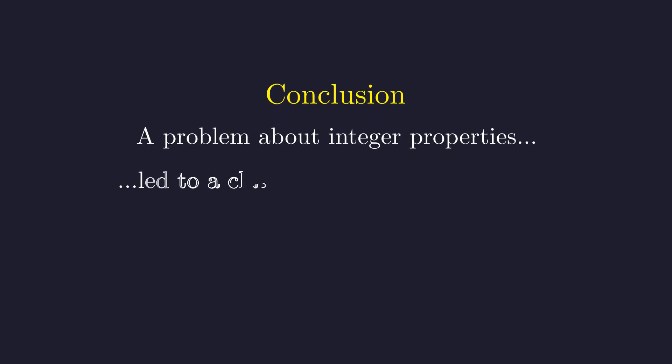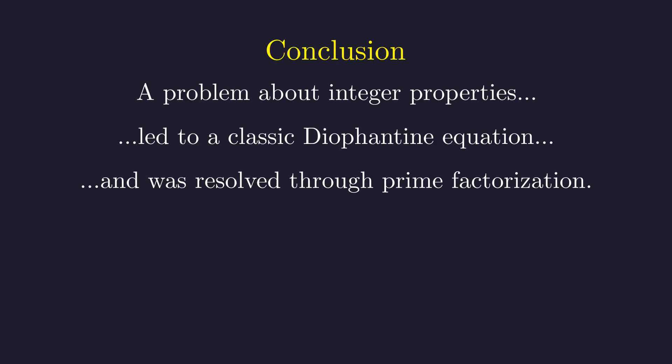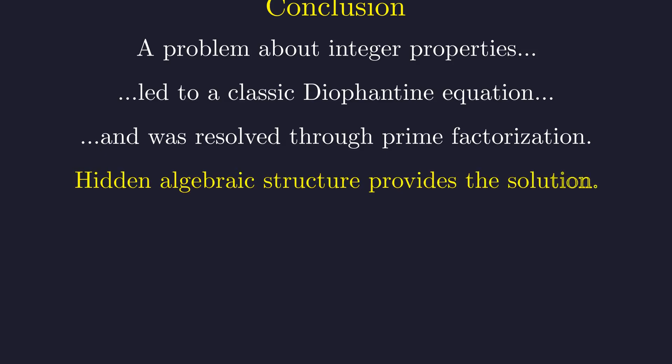Let's reflect on the path we took to this solution. The problem began with a condition on an integer. Analysis of this condition revealed an underlying Pell's equation, whose structure was determined completely by prime factorization and modular arithmetic. This demonstrates how uncovering a problem's hidden algebraic structure is often the key to its solution.